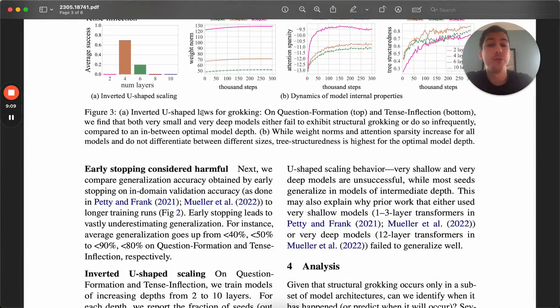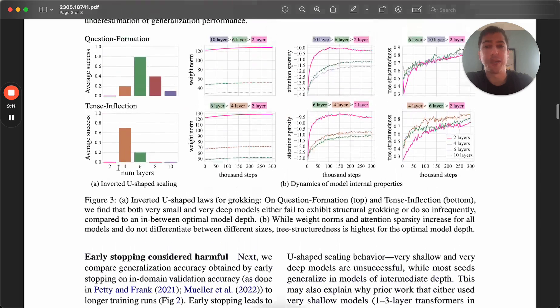And this is their U-shaped laws for grokking, that the number of layers follows this U pattern where you succeed in some in the middle, but not on either extreme.